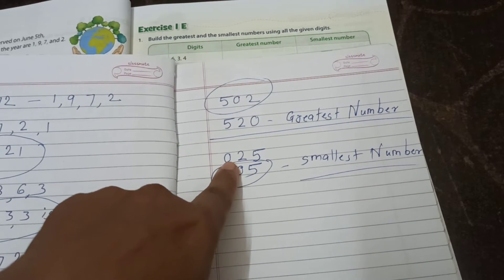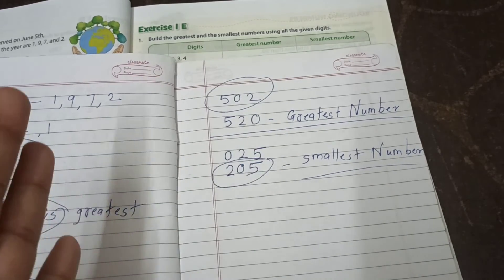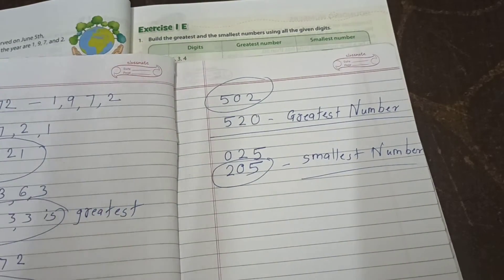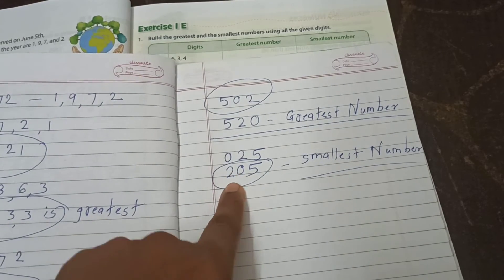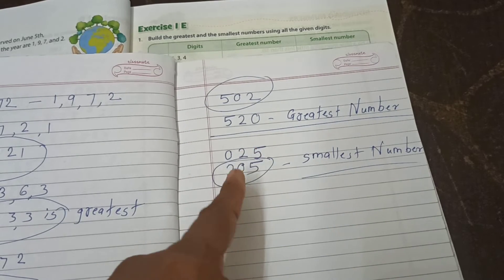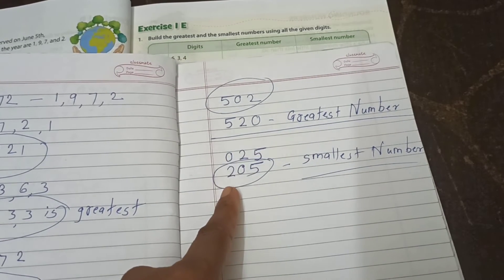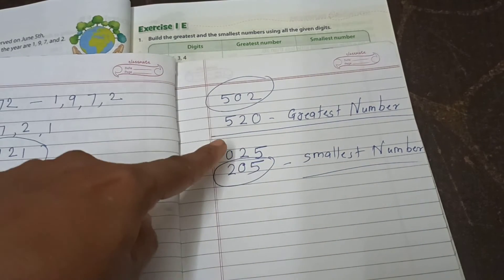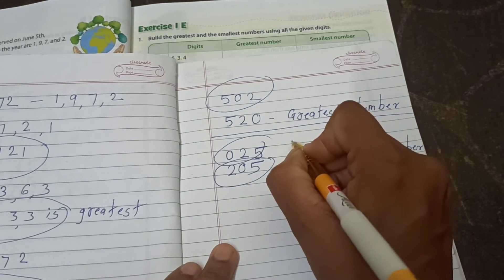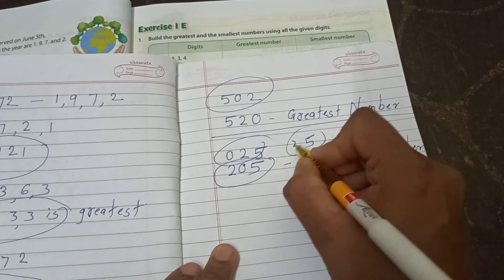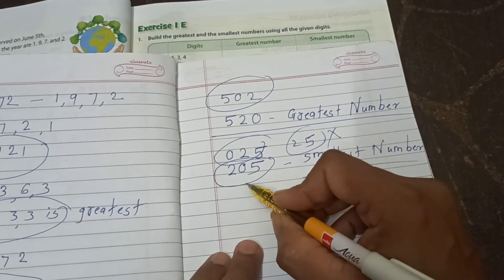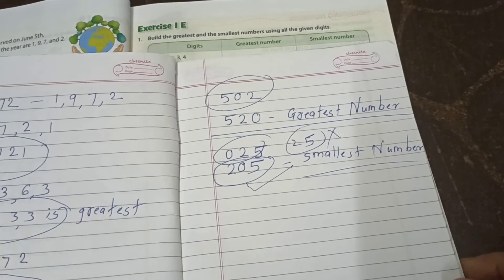0 first nahi, like 0, 2, 5 means only 25 jaata hai, kyunki hame three digits use karke hi smallest number banana hai. So pahle agar 2 lete hai, or between zero lete hai, to yaha pe zero ka meanings bhi dahtahe. To smallest number ho jaega 205. And if we write down first 0, then 2, 5 means 25 are same. Means we using only 2 digits, so it's a wrong. And this one a correct smallest number.